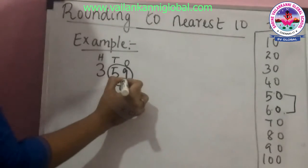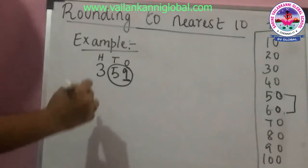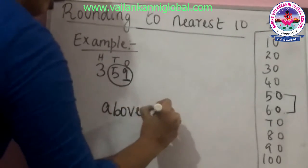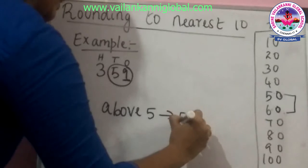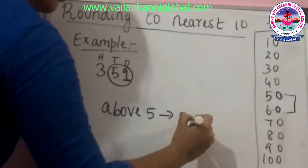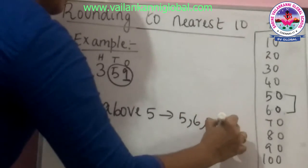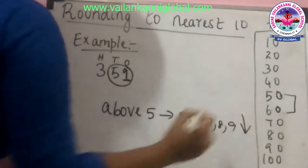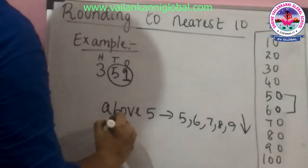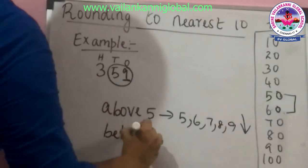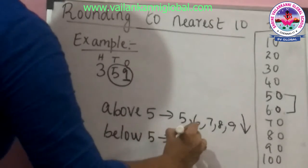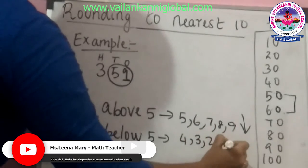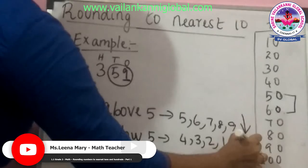To decide which number to choose, just look at the last digit. The last digit is 9. If the last digit is 5 or above — that is 5, 6, 7, 8, or 9 — you are going to round it down. If the number is below 5 — like 4, 3, 2, 1, or 0 — you are going to round it up.